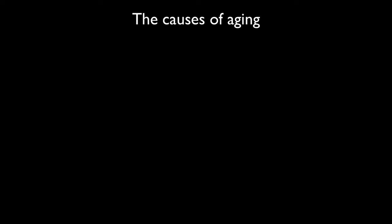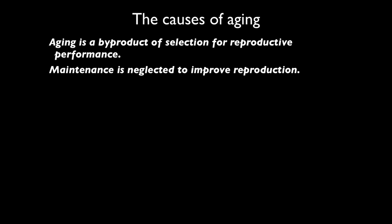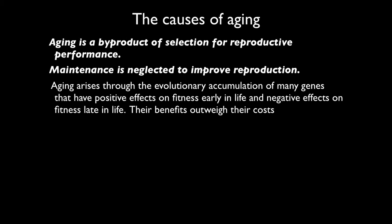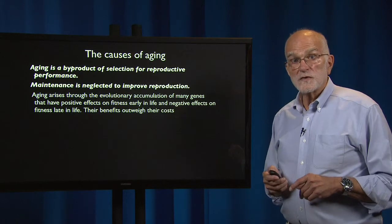So what are the causes of aging? We have covered some of these in previous lectures, but it's a good idea to recap because this is the context in which our vulnerability for cancer arises. Aging is a byproduct of selection for reproductive performance — that's the essential idea. In this process, maintenance is neglected in order to improve reproduction. Aging arises through the evolutionary accumulation of many genes that have positive effects on fitness early in life and negative effects on fitness late in life. So their benefits outweigh their costs from the point of view of evolution, which is not the point of view of a patient with cancer.